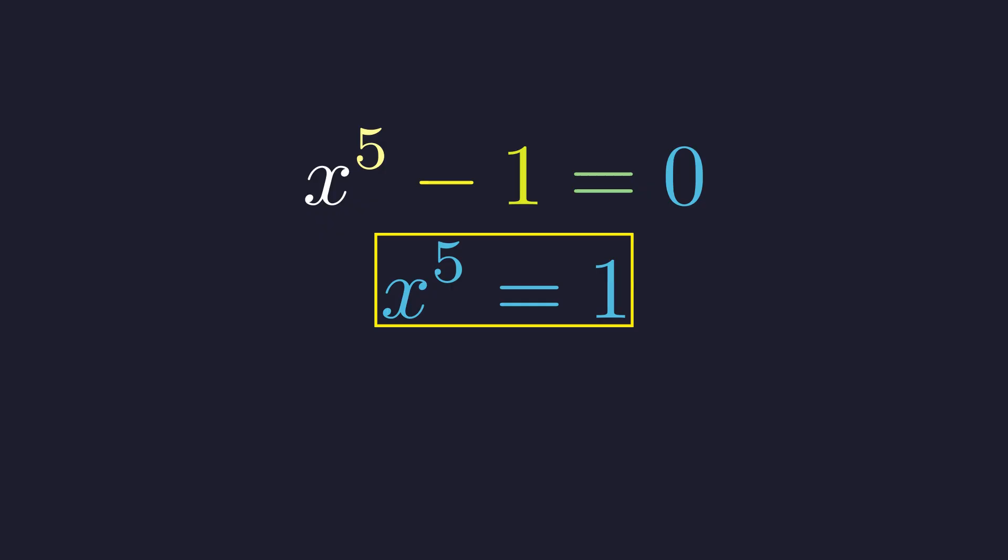Now, of course, x equals 1 is an obvious solution, but a fifth-degree polynomial must have five solutions. Where are the other four? To find them, we will embark on two independent journeys, one through the visual world of geometry and one through the symbolic world of pure algebra.